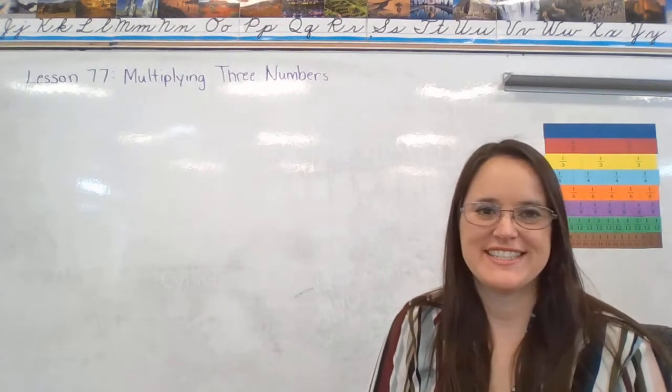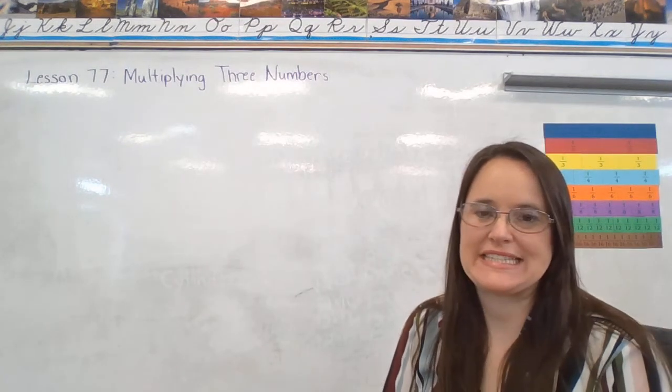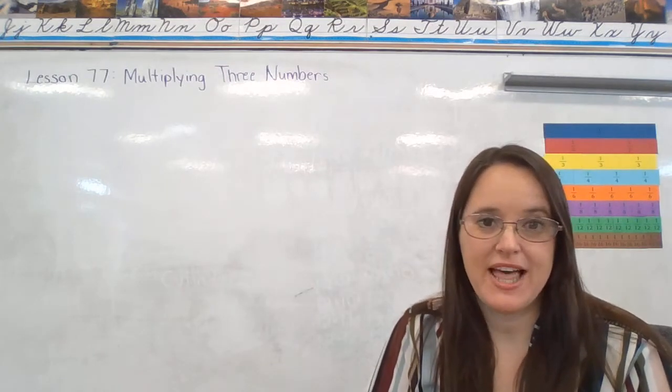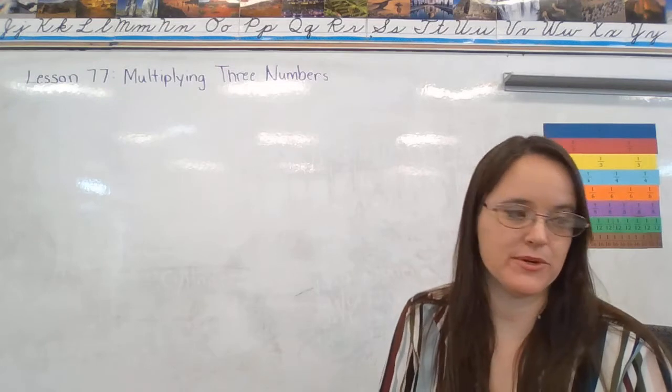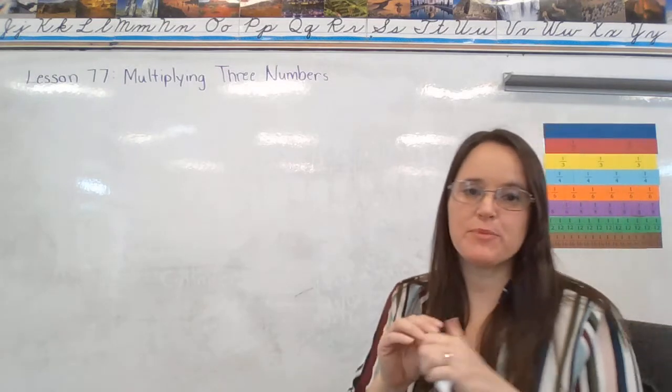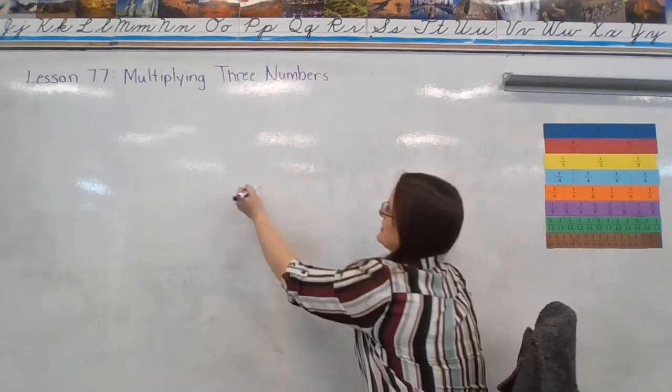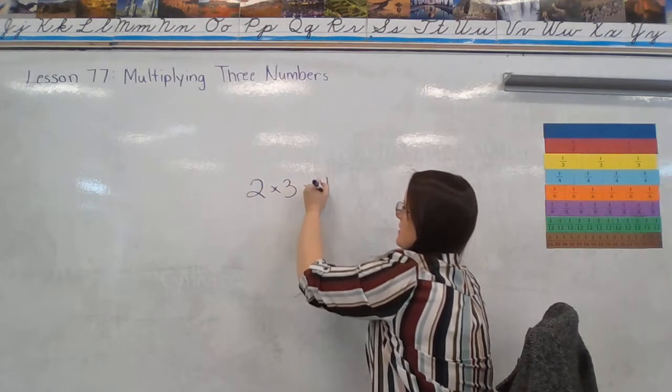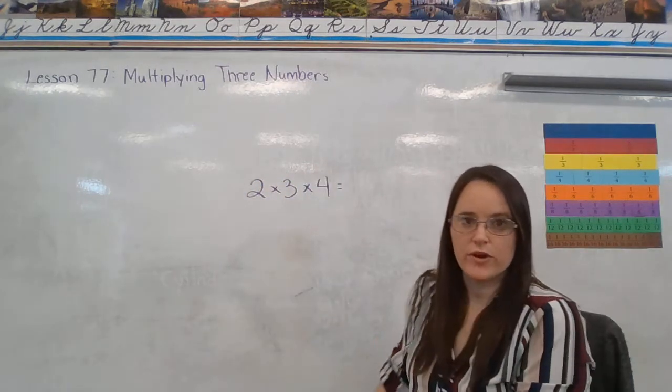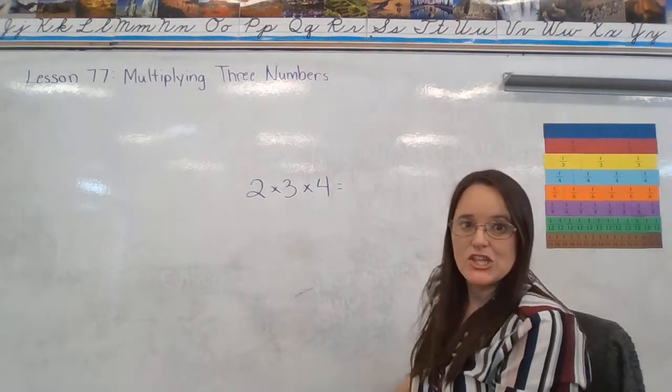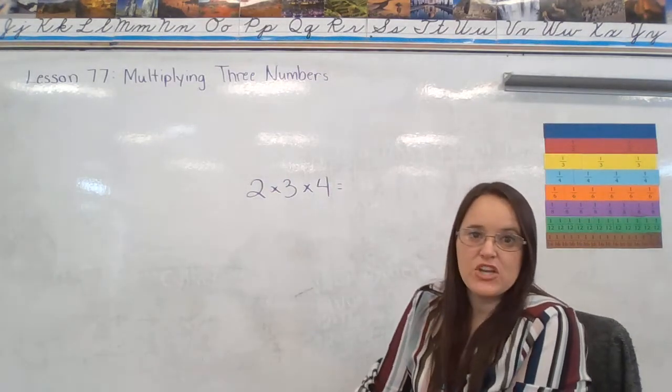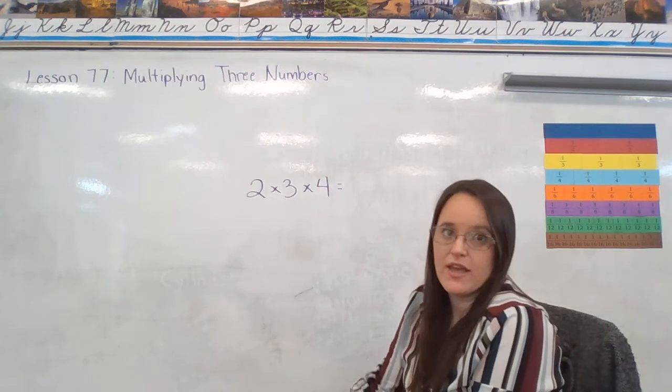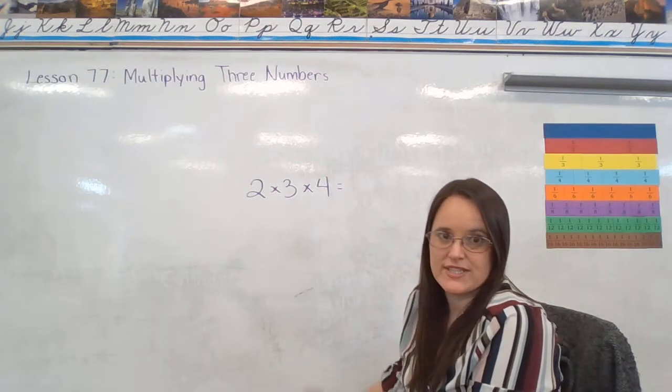Hi class! Today we are on Saxon Math Book 3, Lesson 77, and today we're going to learn how to multiply three numbers. While this might look complicated, it's really no different than anything that you've already been doing. We just have one extra step.